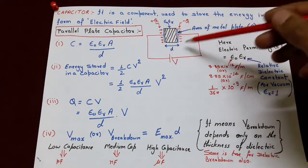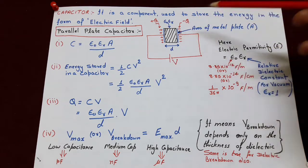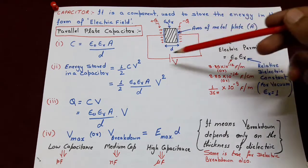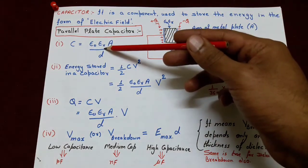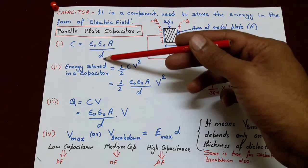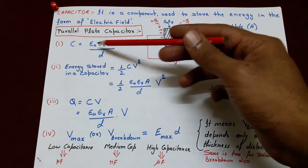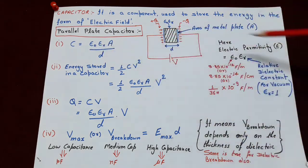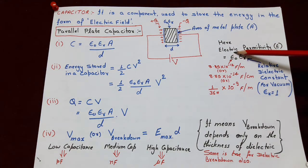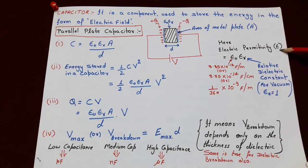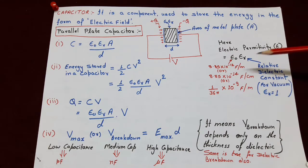Ab in do plates ke beech mein ek dielectric jiska dielectric constant epsilon-r hai, co place kiya gaya hai. Is tarah se ek capacitor form hota hai jis ki capacitance nikalne ka formula hota hai: C is equal to epsilon-naught times epsilon-r times A upon d. Yahan epsilon-naught into epsilon-r ko combine form mein hum bol sakte hain electric permittivity, denoted by epsilon, where epsilon-r is the relative dielectric constant. For vacuum, epsilon-r is equal to 1.